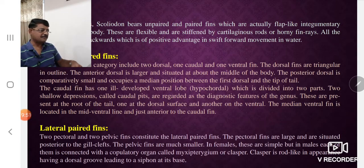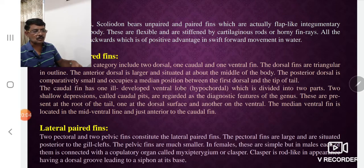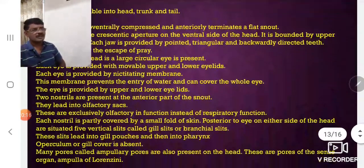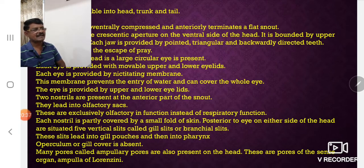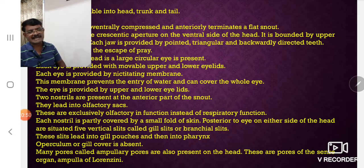In the male, the clasper is a rod-like structure with a dorsal groove leading to a siphon at its base, always present between the pelvic fins. Regarding body morphology, the head is dorso-ventrally compressed, anteriorly terminating in a flat snout, with a wide crescentic aperture bounded by upper and lower jaws consisting of rows of backwardly directed teeth.